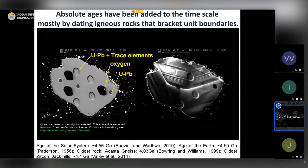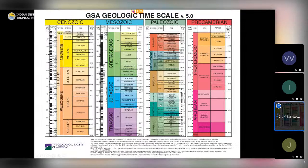For absolute ages, zircon dating is very interesting — different areas of zircon grains are bombarded with lasers, giving uranium-lead dating and oxygen isotope information. This produces the geological time scale — from Archaean, Proterozoic, through Cambrian and Paleozoic, to Tertiary and Quaternary — as brought out by the Geological Society of America.